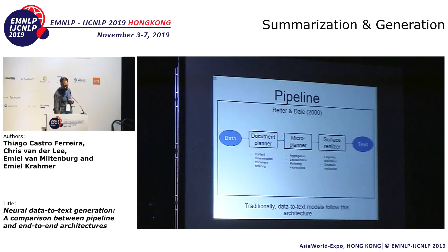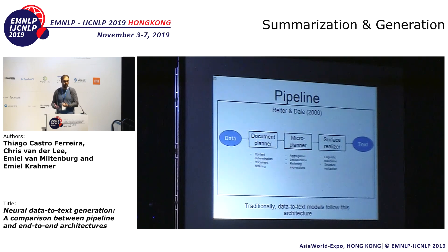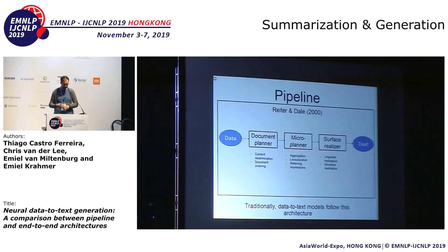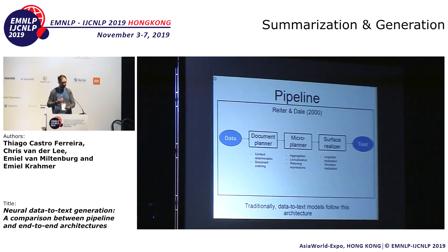I want to go over pipeline and end-to-end shortly. Pipeline is the traditional way of doing data-to-text generation. The idea originally was that the whole conversion of data-to-text was too complex to do it all at once, so you had to use several steps or modules. First, you used the document planner to figure out what to say, then with the micro planner you figured out how to say it, and finally you realized it into fluent text.